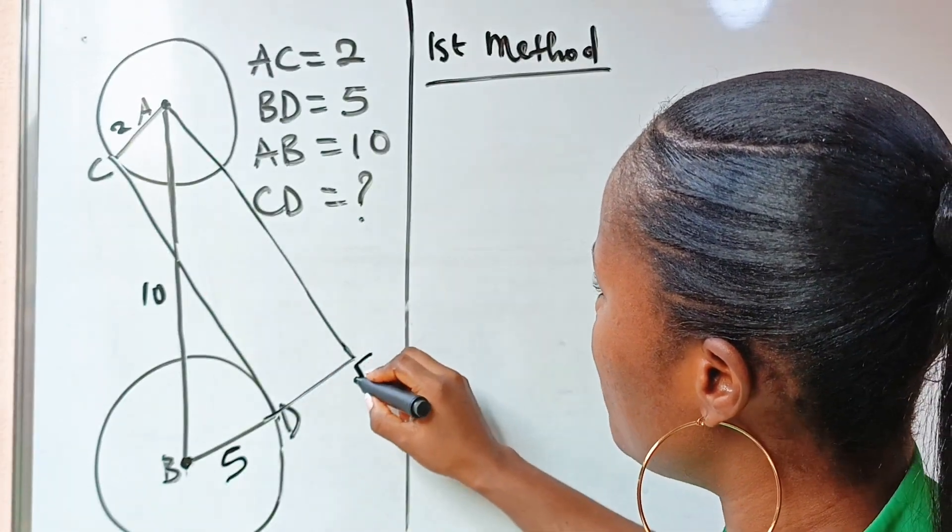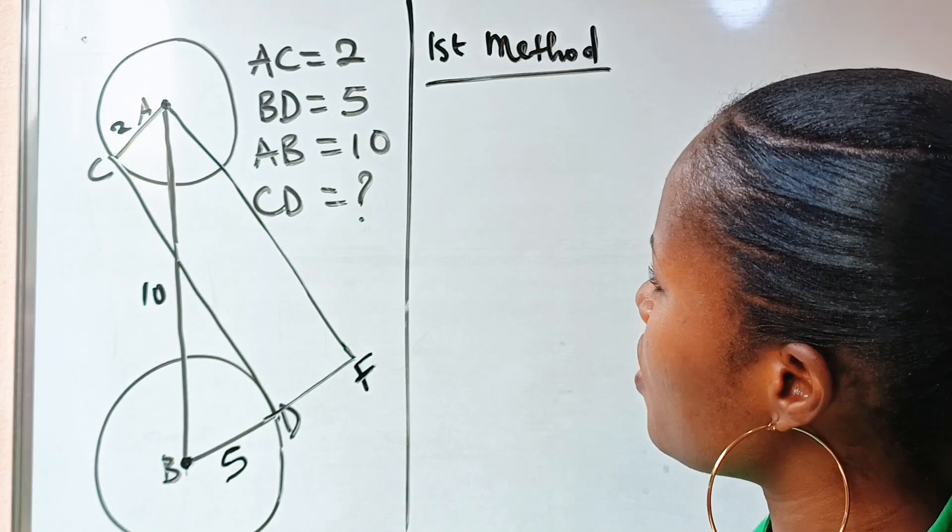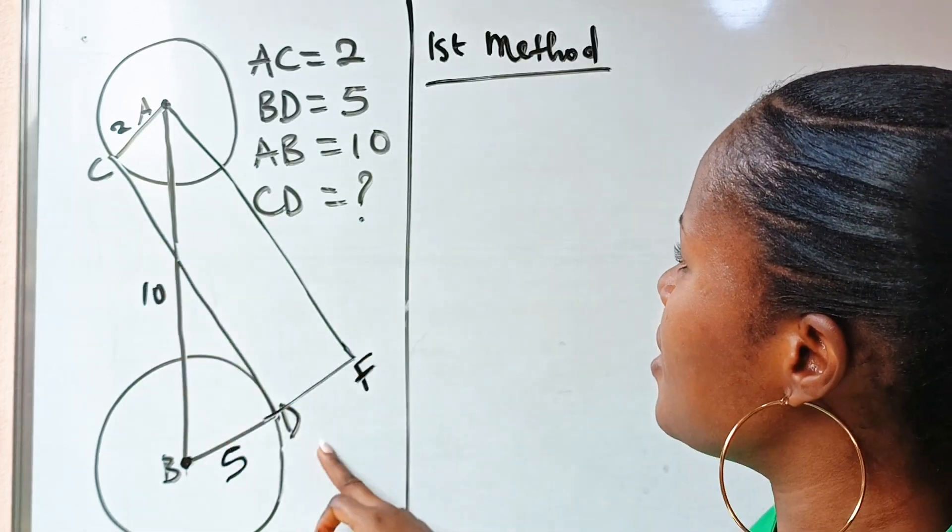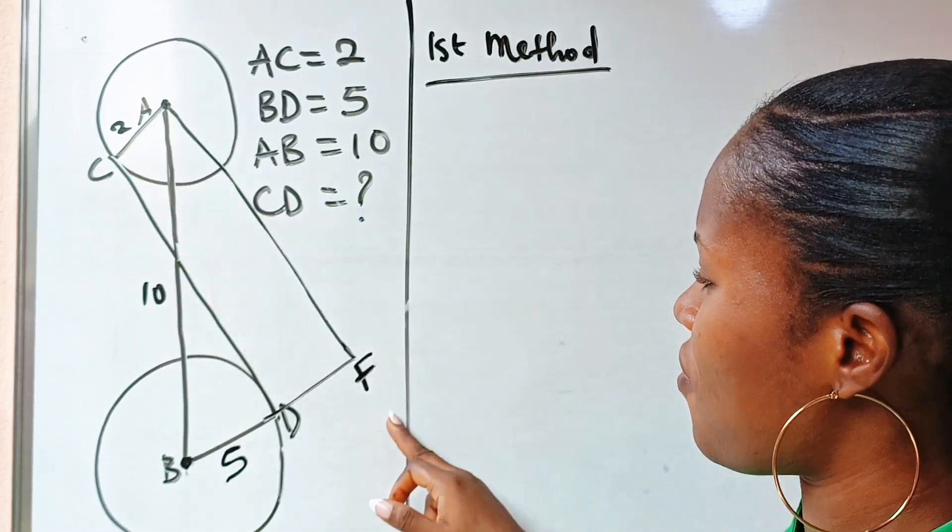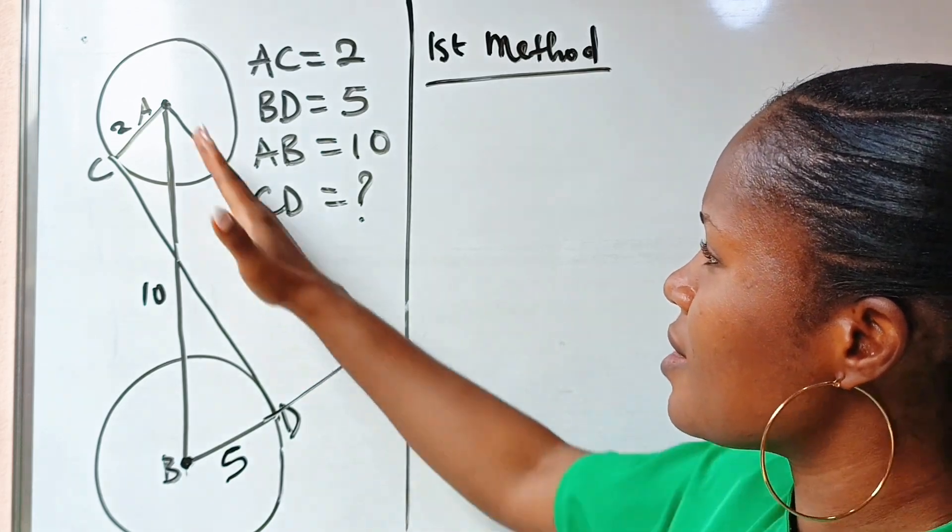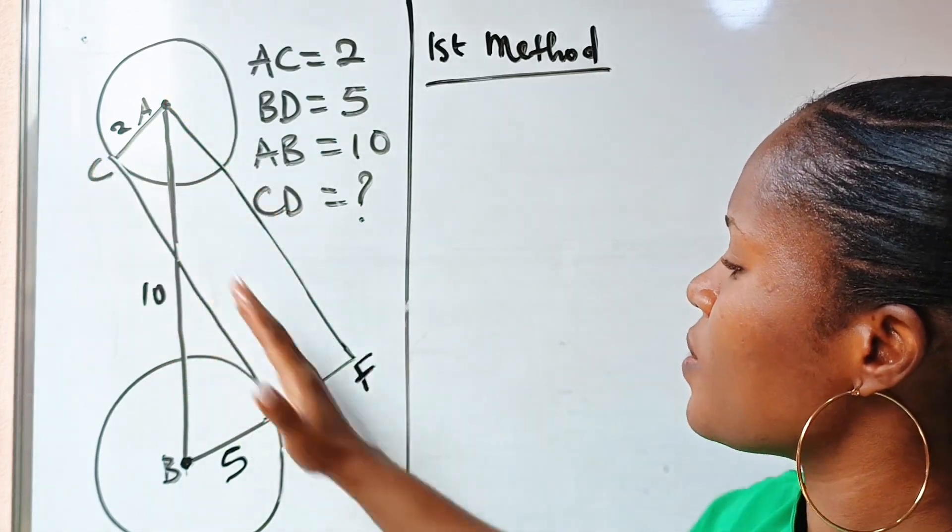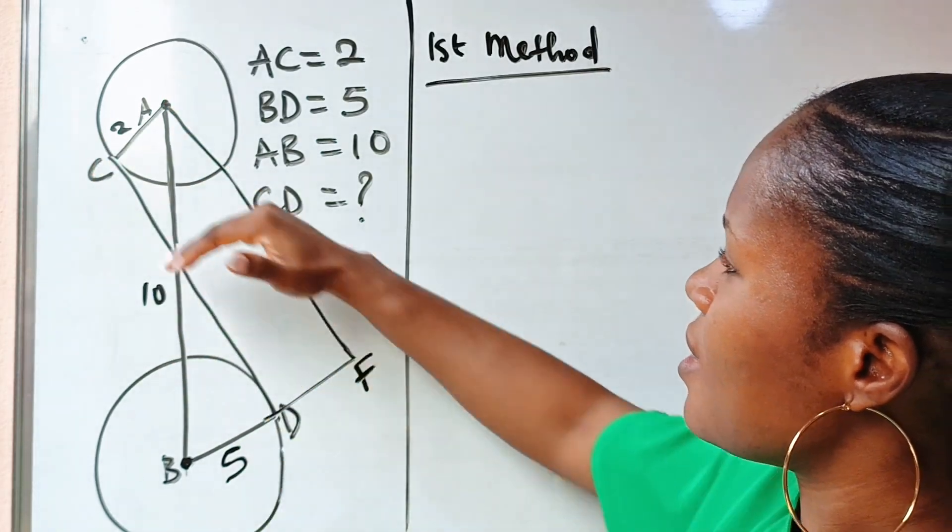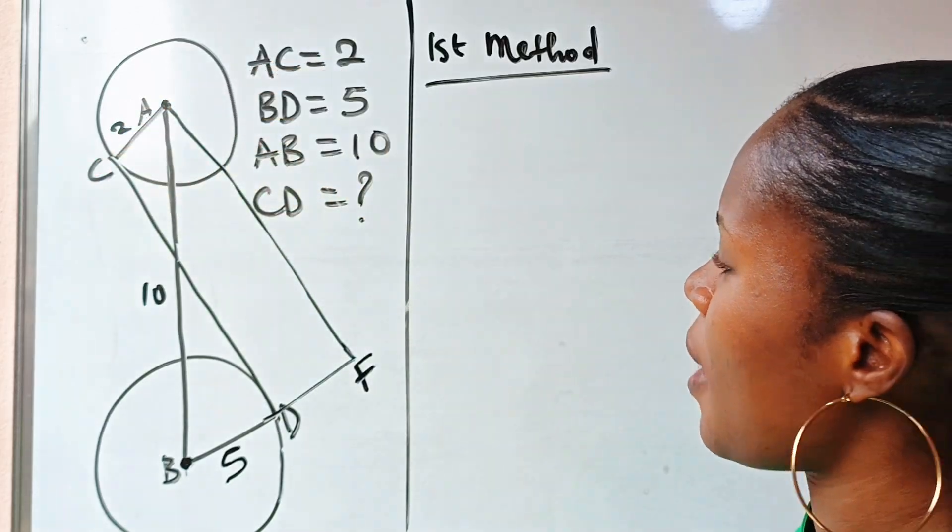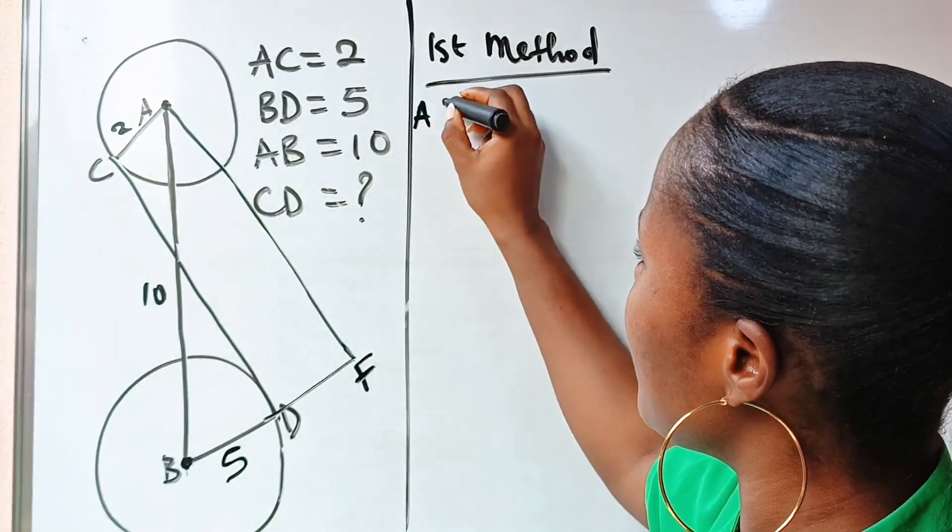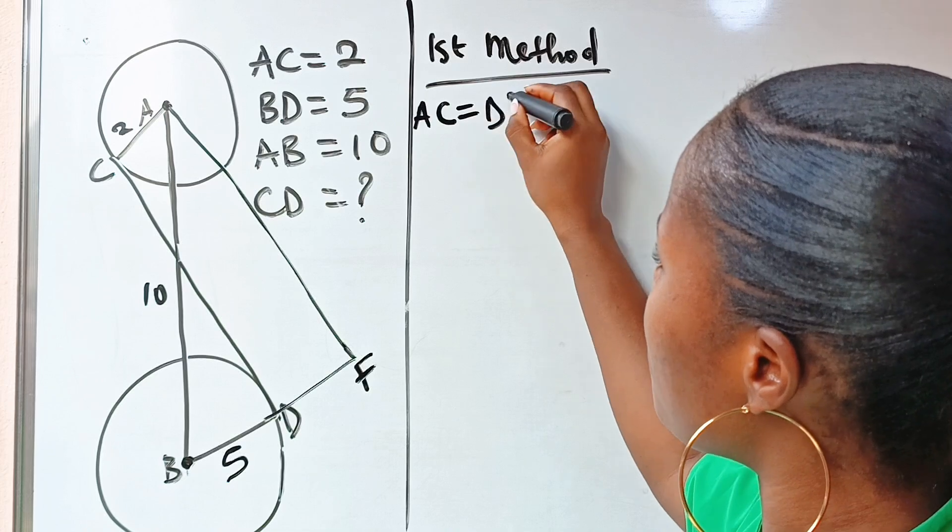Now if we complete this, let's call this place F. So now we have CD and AF, and you will agree with me that since this line is parallel to this, this line is parallel to this, right?